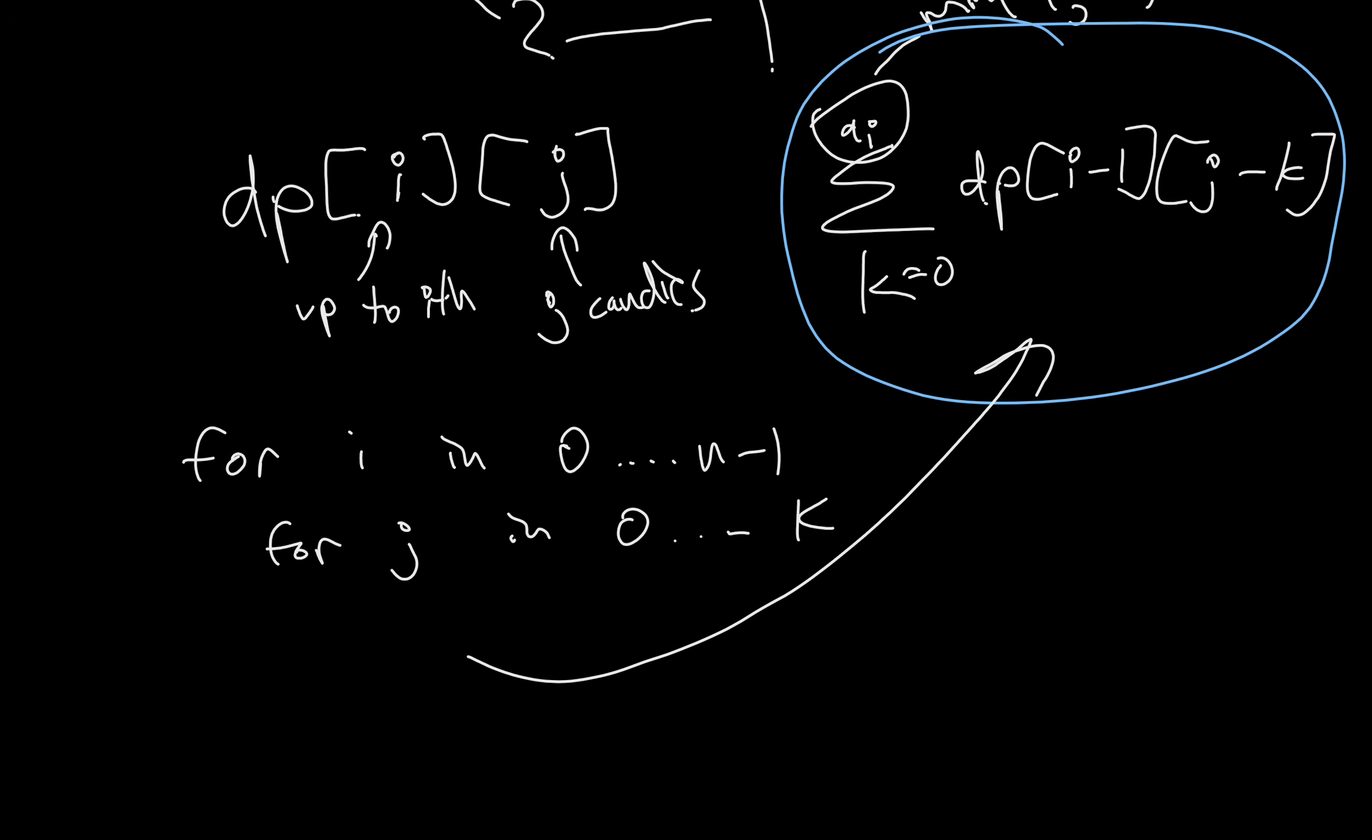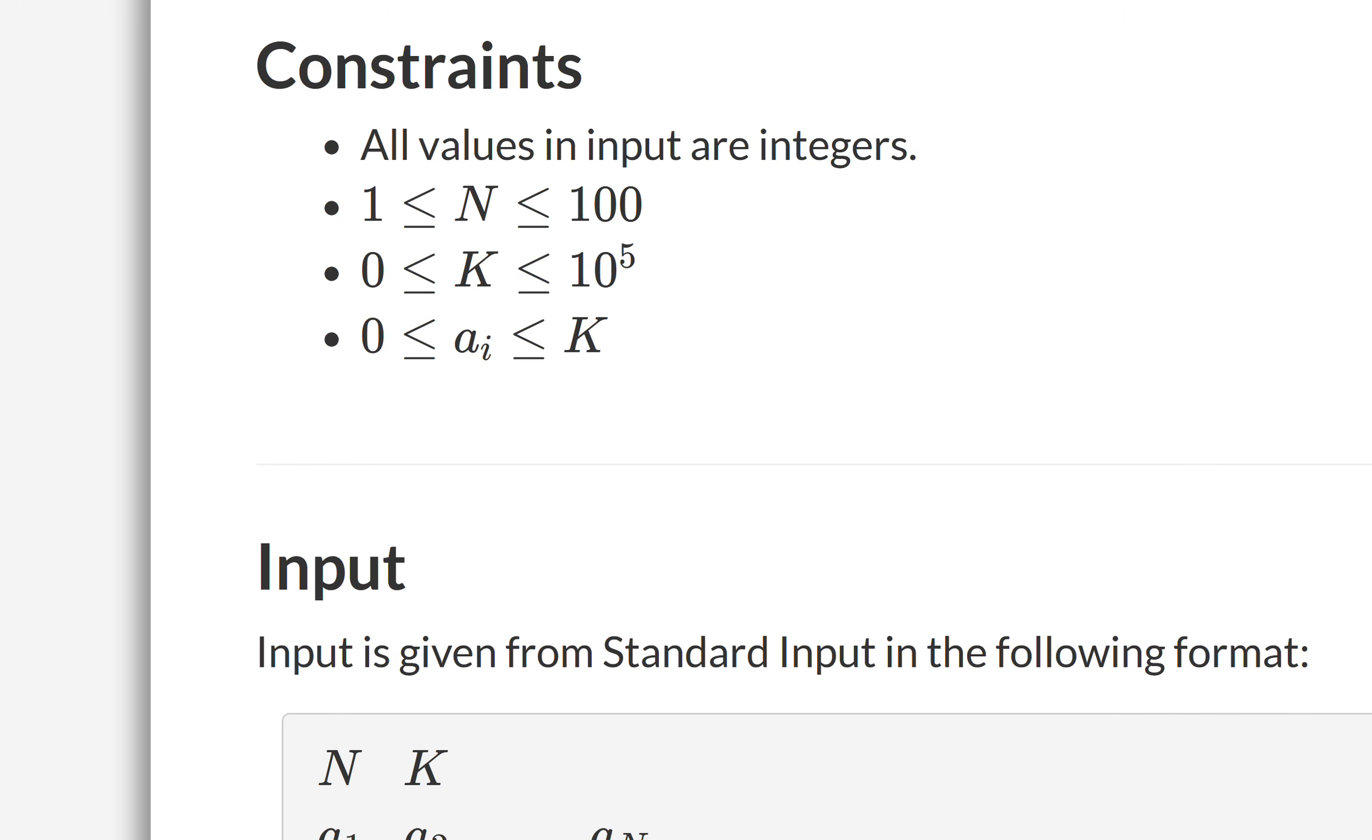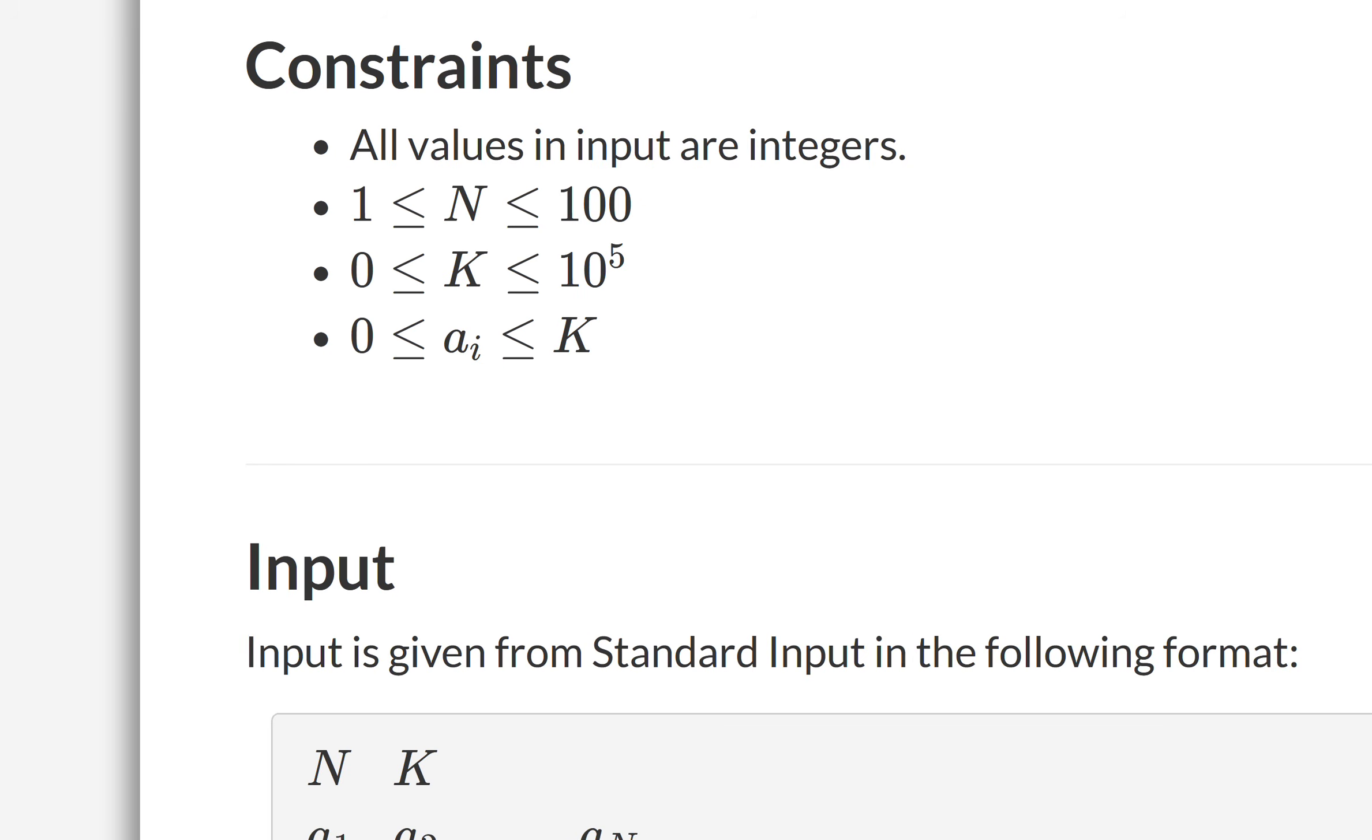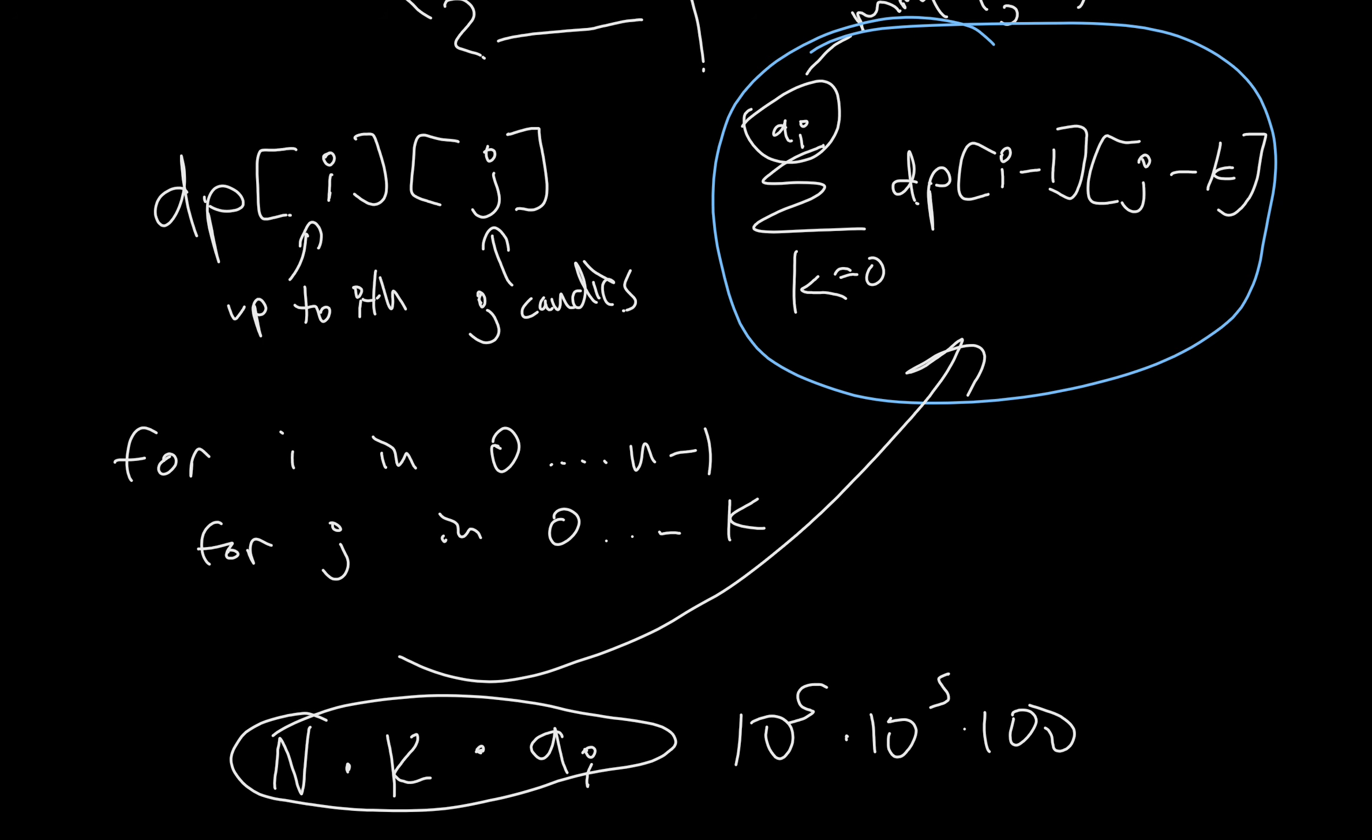Now, the solution for this is, we have to loop through n, then we have to loop through k, and then to do this, it'll be up to ai, whatever the maximum possible for ai is. So, let's look at how much that is. As you can see, ai is at most k. So, this will not fall within the time constraints, because that's like 10 to the 5 times 10 to the 5 times 100, which is way too much.